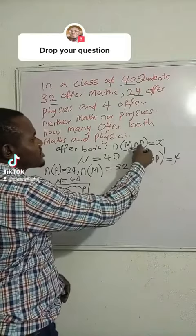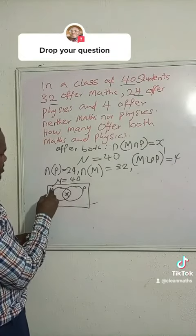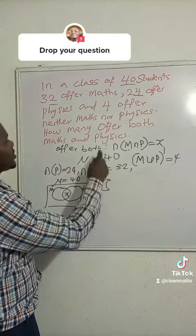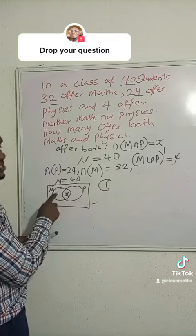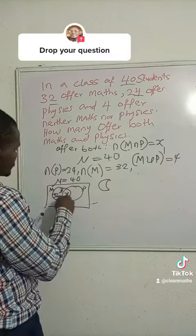So then the intersection that we're asked to find, the number of students that study math and physics, is x. Now if x has been taken out of m, what we're left with is 32 minus x, because the whole mathematics is 32 and we have removed this part.